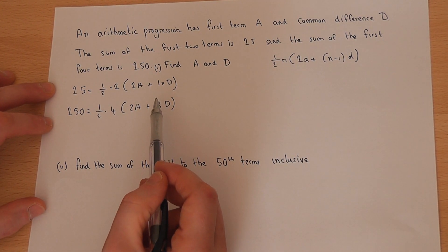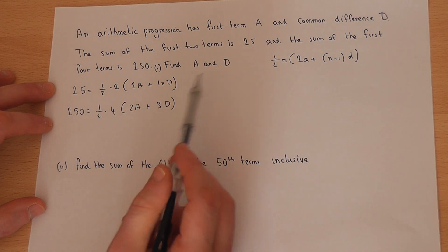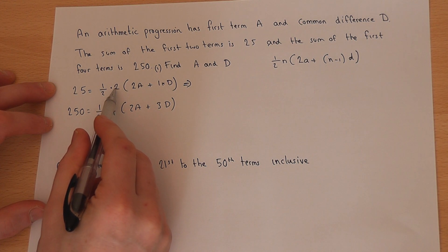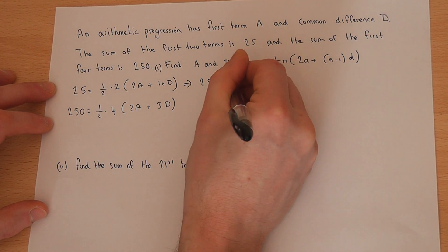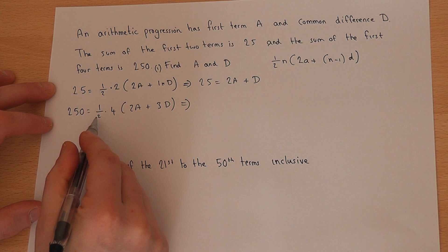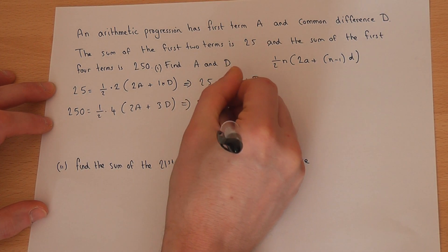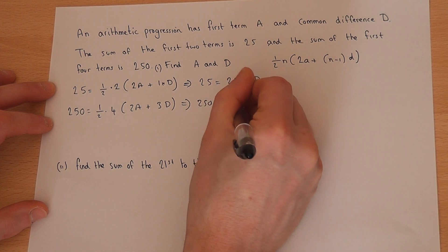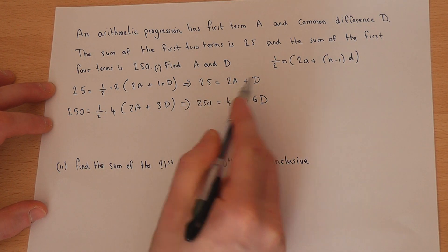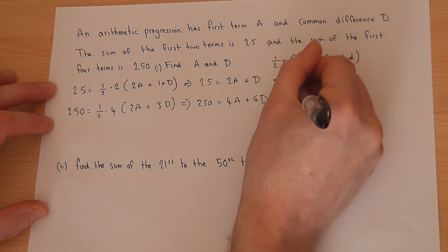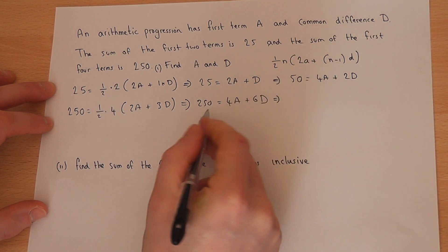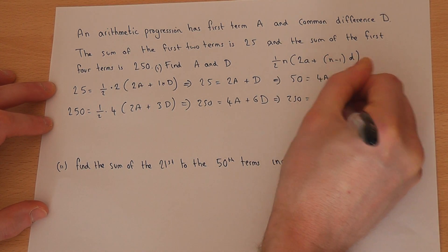So this gives me two equations which I can try to solve simultaneously for a and for d. Now, if I look at the first one, a half times 2 is 1, so 25 just equals 2a plus d. If I look at the bottom statement, a half of 4 is 2, so I can do two lots of the bracket to get 4a plus 6d.